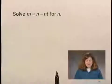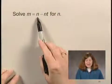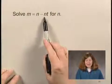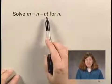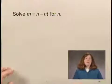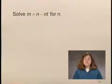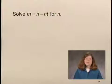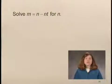In this exercise, we'll solve an equation for a letter. We'll solve m equals n minus nt for n. That means I need n by itself on one side of the equation. The other side of the equation should be an expression that does not contain n at all.